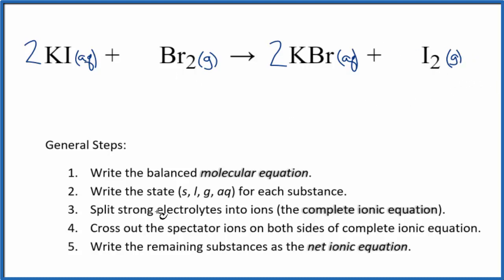Now that we have the states, we can split the strong electrolytes into ions. That'll give us the complete ionic equation. So potassium on the periodic table, that's in group one, has a one plus ionic charge. Iodide, that's a negative. So we'll have two of these potassium ions, 2K plus. Plus two iodide ions.